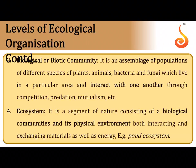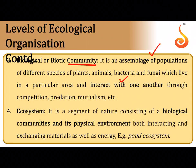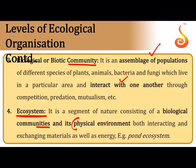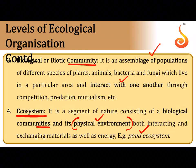A biotic or biological community is a group of populations — different species that come together and constantly interact with each other. A community gives rise to an ecosystem, where there is interaction not only between living organisms but also between the community and its non-living environment, including abiotic factors such as temperature, light, minerals, water, and soil. The best example of a functional ecosystem is the pond ecosystem.